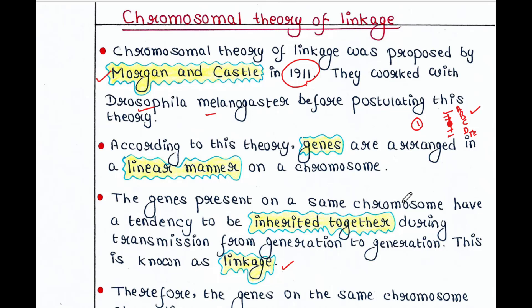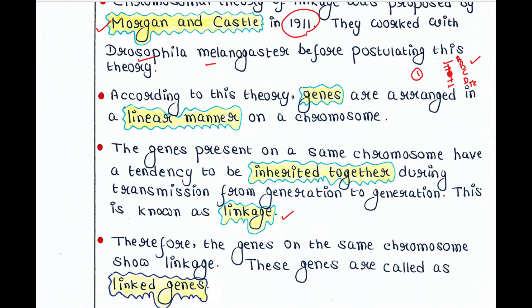That means these A, B, C, D, E — these 5 genes are inherited together during transmission from generation to generation, from parents to offspring. This is known as linkage. Linkage means these genes are linked, they are connected. Therefore, the genes on the same chromosome show linkage.